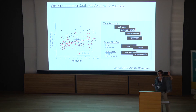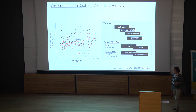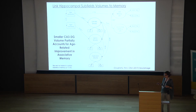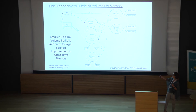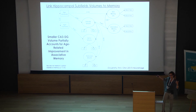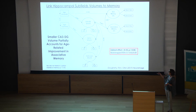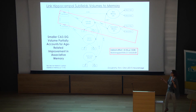We answered the measurement and age-difference questions, and can now link back to behavior. We took all the brain measures and behavioral data and put them together in a structural equation model. The model showed that age differences in the volume of specifically CA3/dentate gyrus — an age-related reduction — were the only region directly related to associative memory. Nothing was related to individual differences in item memory, and the significant indirect effect showed that smaller CA3/dentate gyrus volume partially accounts for age-related improvement in associative memory.